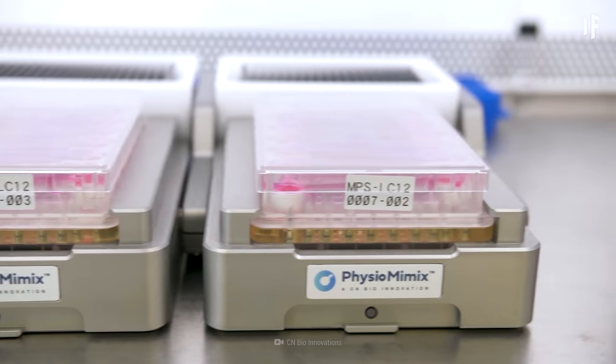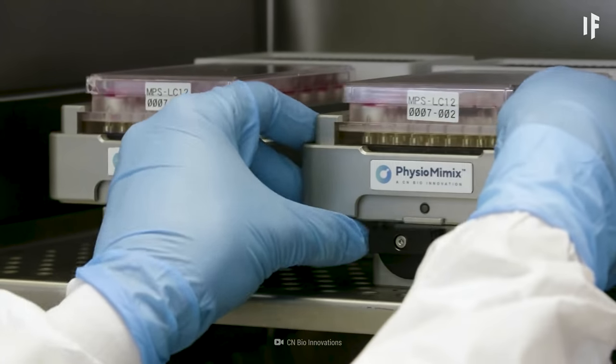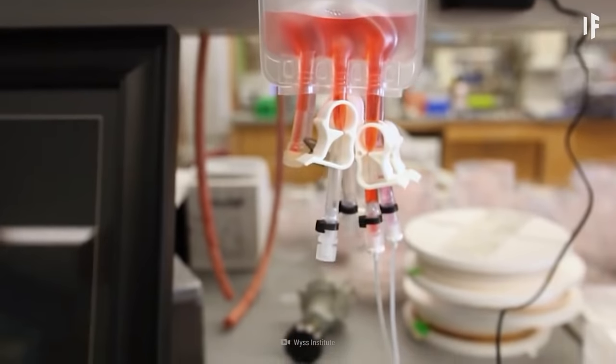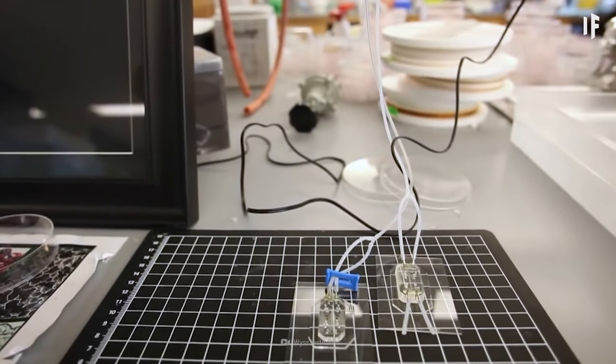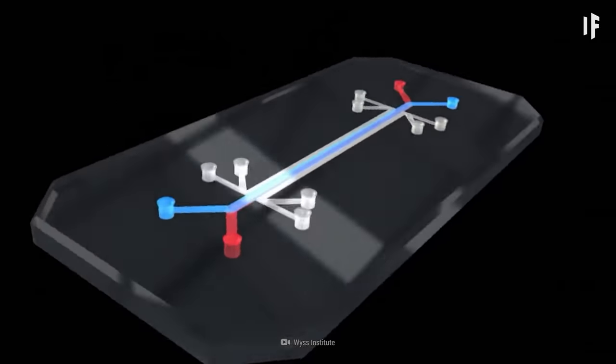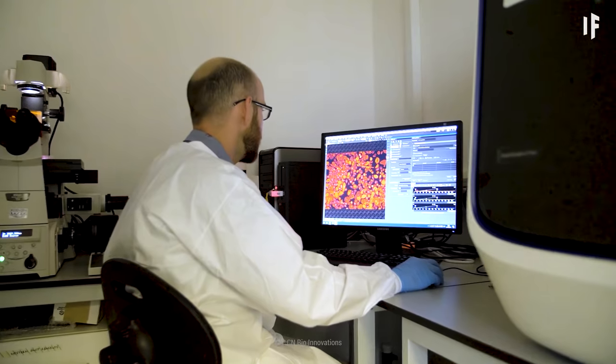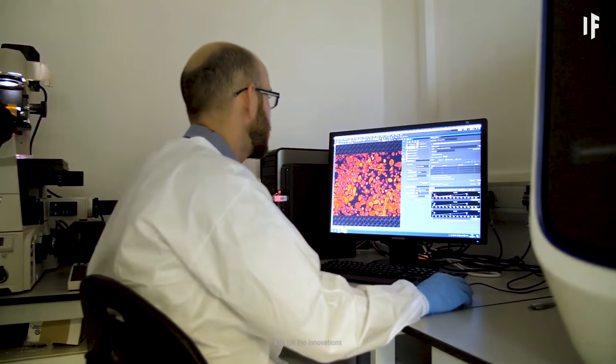They could move on to testing chemicals on cultured human cells that mimic the functions of specific organs. These are called organs-on-a-chip, and they allow researchers to test new drugs on human cells without testing directly on humans.